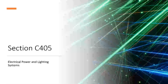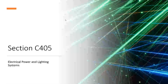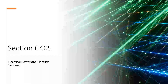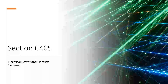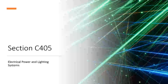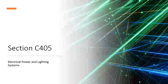Thank you for joining us today. We're going to talk about Section C405, Electrical Power and Lighting Systems of the IECC 2018 Commercial Lighting Code. My name is Dylan Agnes. I'm a research scientist here at the Integrated Design Lab, University of Idaho. This is being sponsored by NIA, the Northwest Energy Efficiency Alliance.